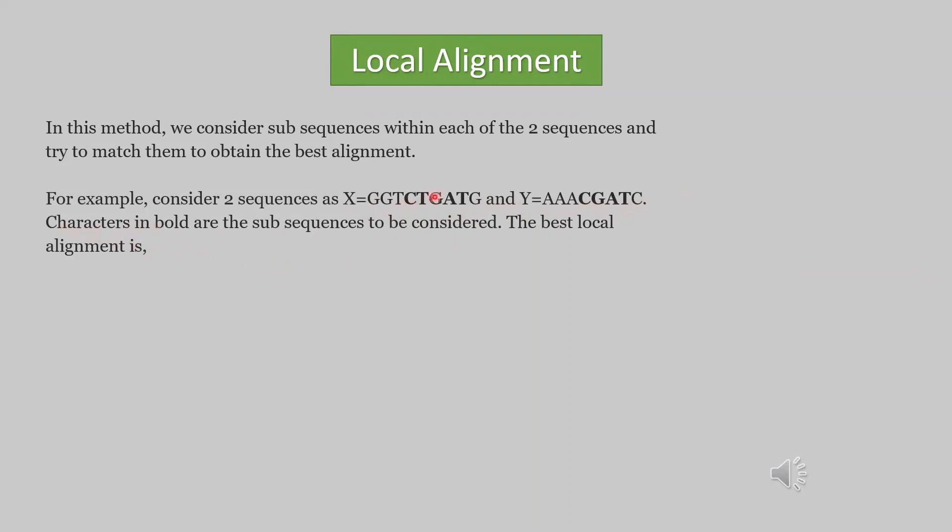The best local alignment is C, T, T has no match so a gap, G match with G, A match with A, T match with T. Here, one gap is introduced to match the two sub-sequences. So, score equals n match multiplied by 1 plus n mismatch multiplied by 0 plus n gap multiplied by 0 equals 4 multiplied by 1 plus 0 multiplied by 0 plus 1 multiplied by 0 equals 4.